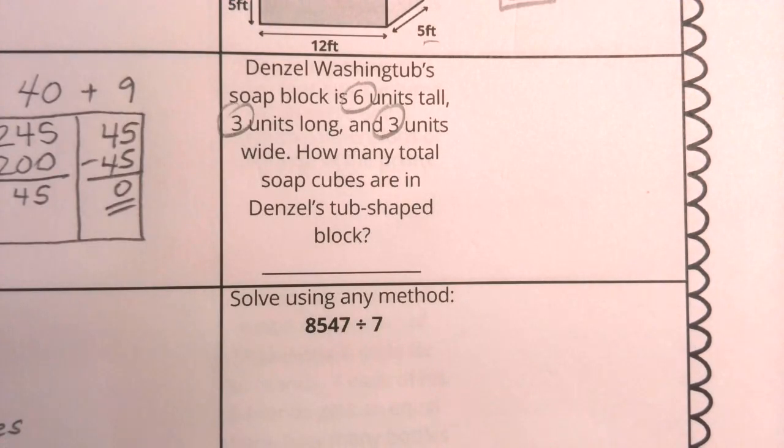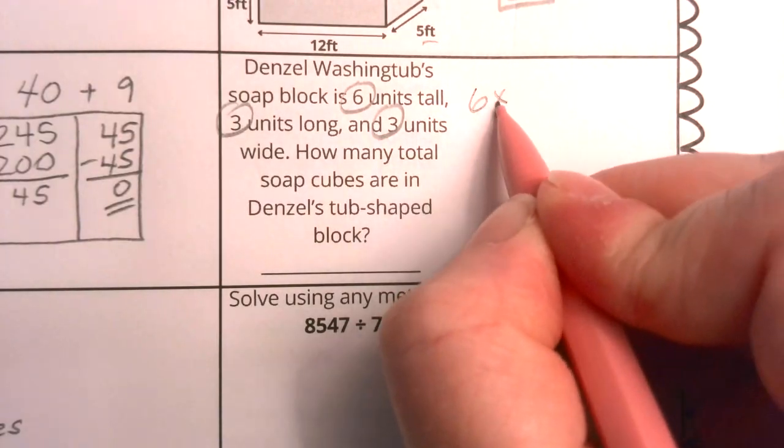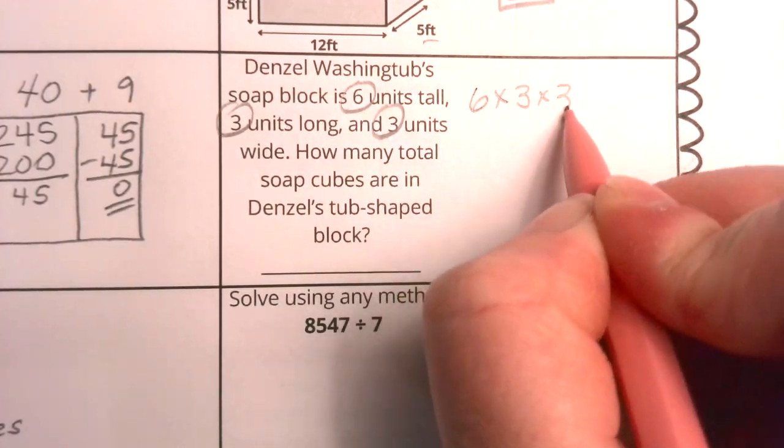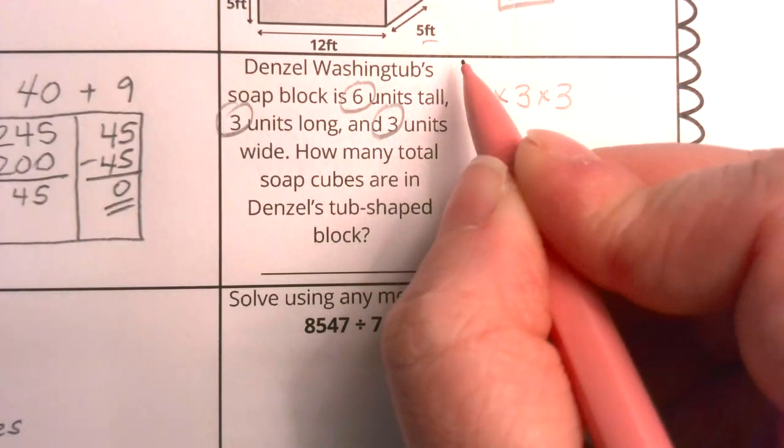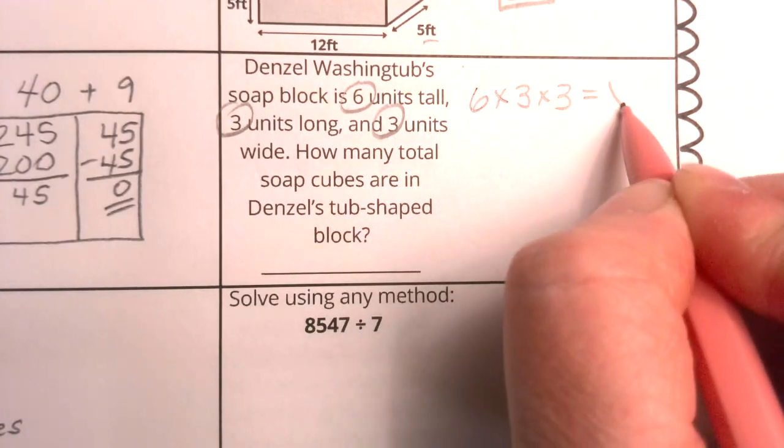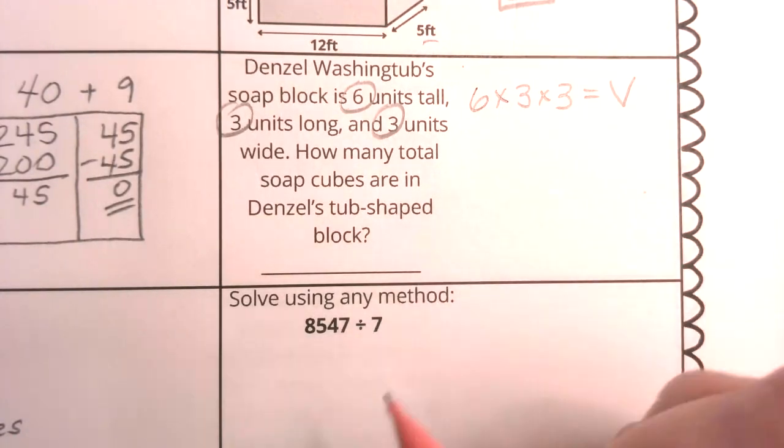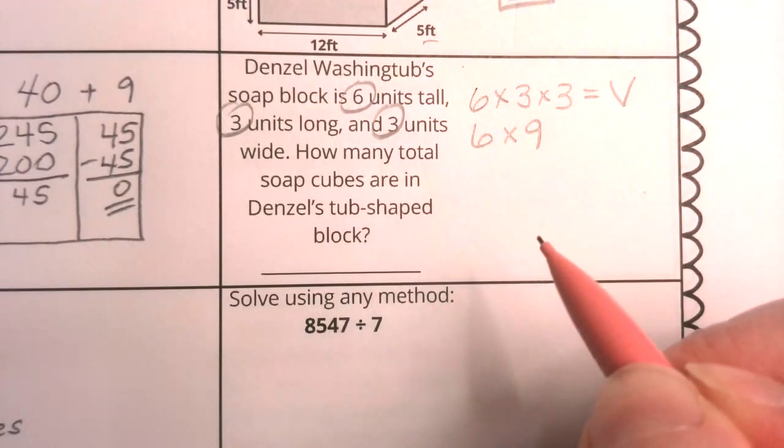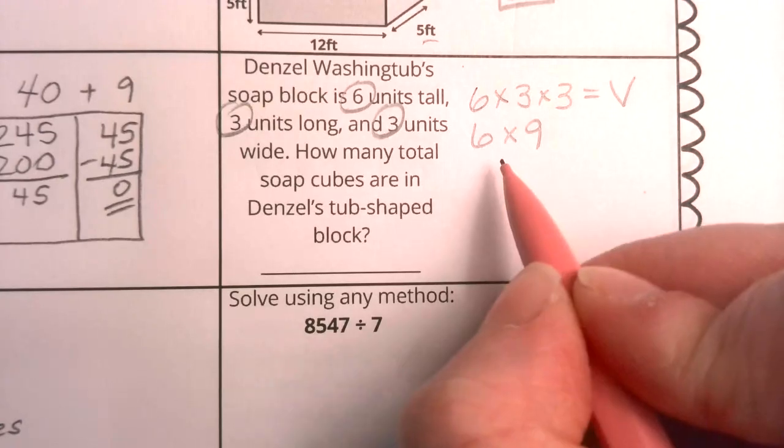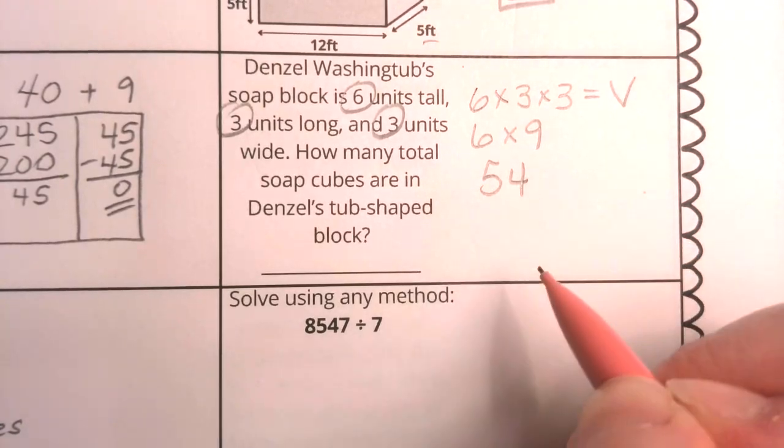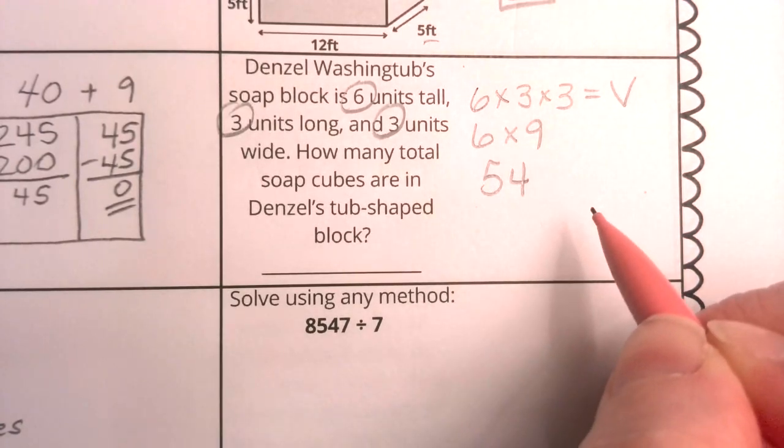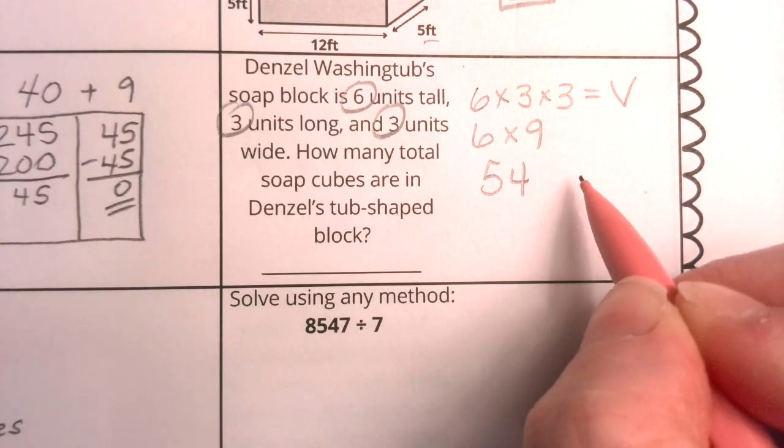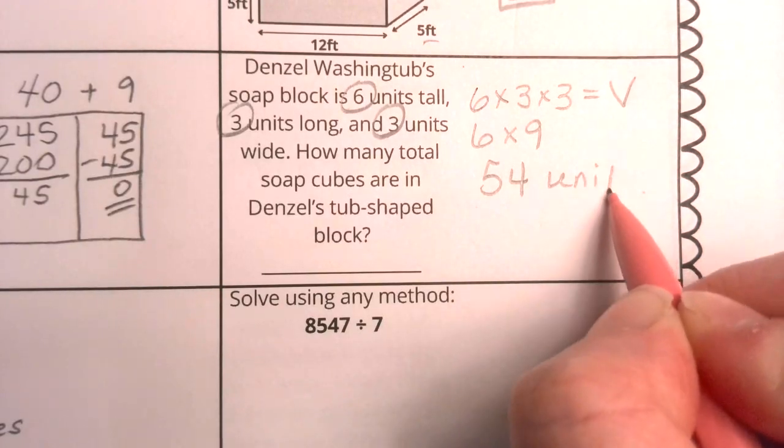Well, I know that I have 6 times 3 times 3. I know that because really that's what that volume is going to equal, length times width times height, right? Well, really this is like 6 times 9, which is a basic fact we've memorized. So we know that we are really looking at 54, and it's going to be 54 units cubed.